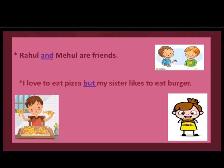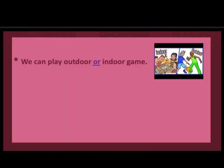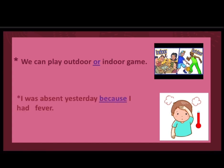Let us look at another example. We can play outdoor or indoor game. So, 'or' is a conjunction used to express a choice. Another example: I was absent yesterday because I had fever. Here, 'because' is a conjunction used to give a reason.